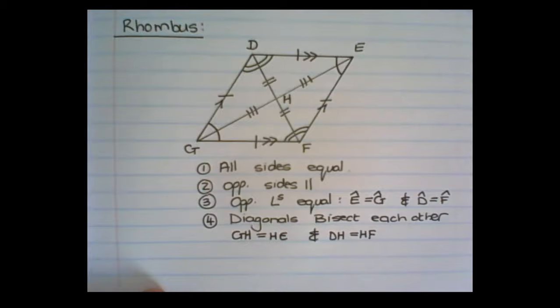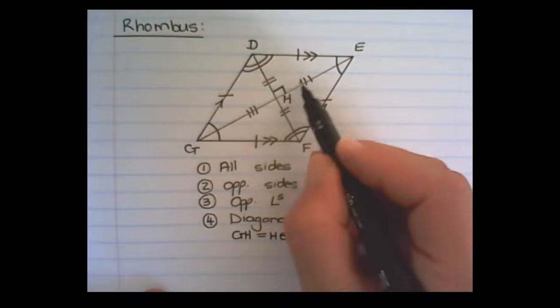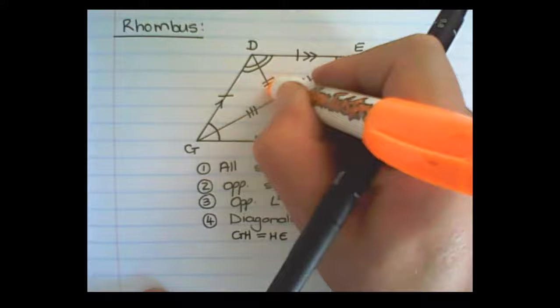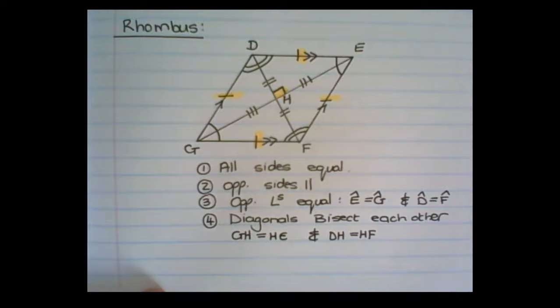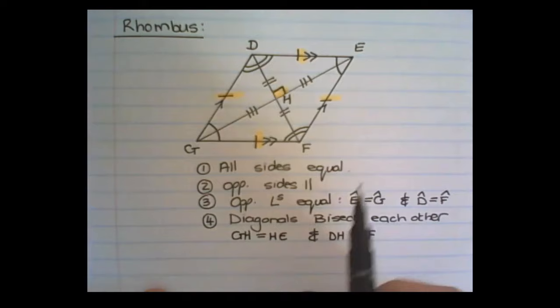Another big property of the rhombus is that the diagonals bisect at 90 degrees, so the angle at which they cut each other is 90 degrees. So the two main properties of a rhombus are: all sides are equal in length, and the diagonals bisect at 90 degrees.